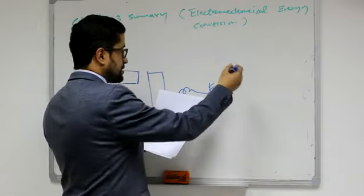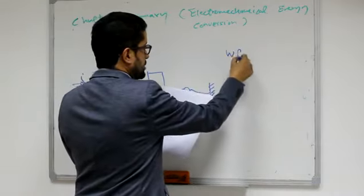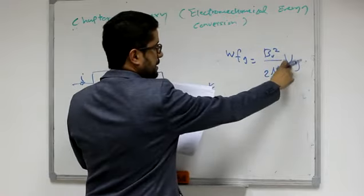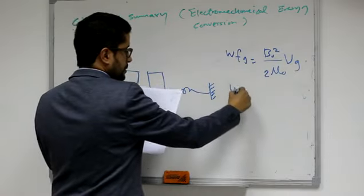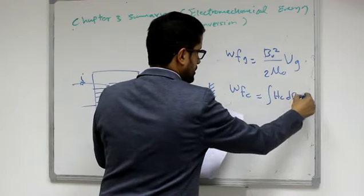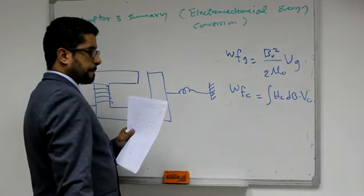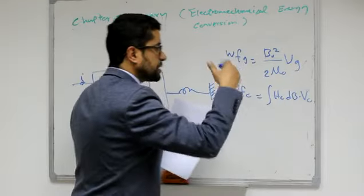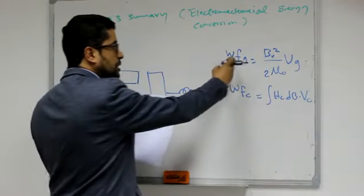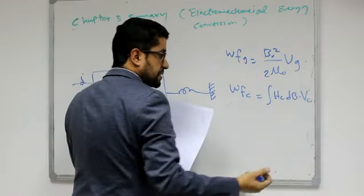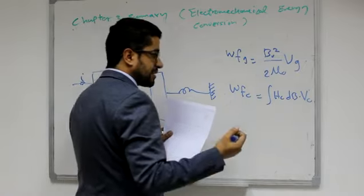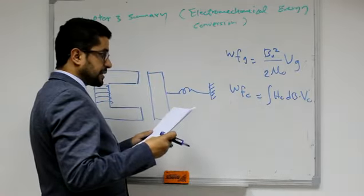The formulas to calculate field energy are as follows: the field energy in the air gap equals B²/(2μ₀) times Vg, where Vg is the volume of the air gap, B is the flux density, and μ₀ is the permeability. The field energy in the core equals the integration of Hc·dB times the volume of the core. The B–H relationship is linear in the air gap, giving a simplified formula, but for ferromagnetic materials like cast steel, the relationship is non-linear, leading to the integral equation.